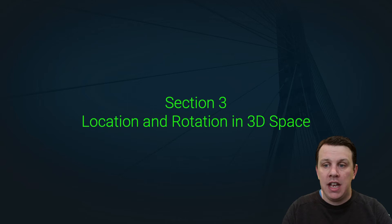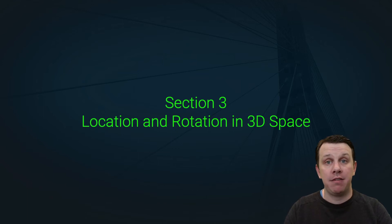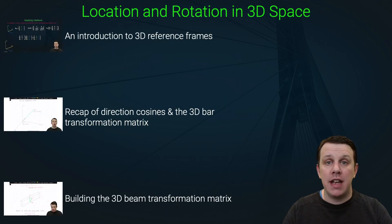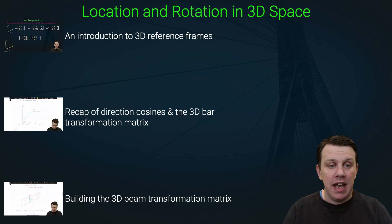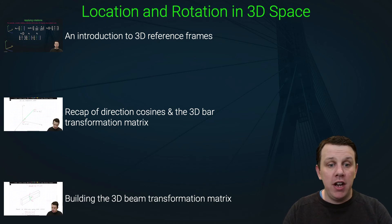The output at the end of this section is going to be a transformation matrix that allows you to map from a local element reference frame to a global reference frame and vice versa. We'll start with a lecture on how to represent orientation in 3D space using reference frames and rotation matrices. After this, we'll review the concept of direction cosines in 2D and see how we can expand this to 3D.